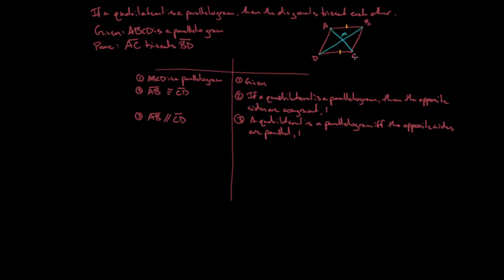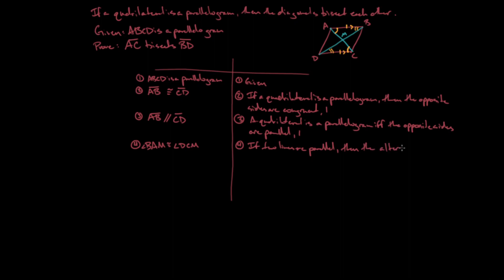The reason I established that is so I can talk about some of the angles in here. I'll mark those sides as parallel. For example, angle BAM is congruent to angle DCM because they are alternate interior angles. So statement 4: angle BAM is congruent to angle DCM. The reason: if two lines are parallel, then the alternate interior angles are congruent — from statement 3.